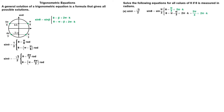The sine of 2 times theta is equal to minus square root of 2 divided by 2. The reference angle is 45 degrees, or pi divided by 4 radians. Sine is negative in quadrant 3 and quadrant 4. We can write sine of 2 times theta equals sine of 5 pi divided by 4. The general solutions are given as follows.